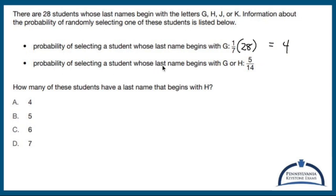Probability of selecting a student whose last name begins with a G or an H. If it's five over 14, and there's 28 students, that means 10 of them have a G or an H.